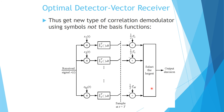Finally, the largest value in the resulting set is selected, and the corresponding decision on the transmitted message is made. This is your optimum receiver, or correlation receiver.